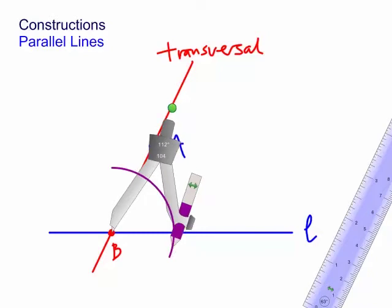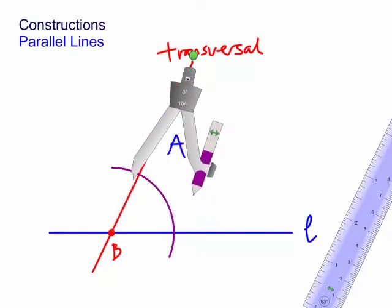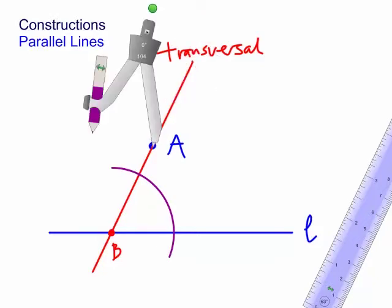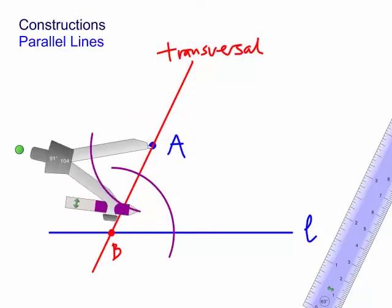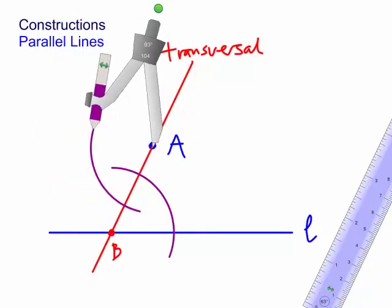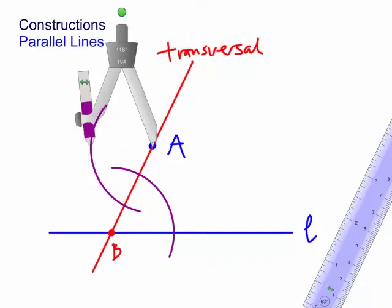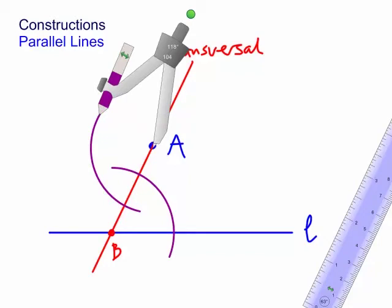We're also going to need to do an arc at point A, using the same radius. Put the compass in at A now. Starting above A and coming down — it's also got to cross the transversal. See how it's crossed the transversal there? That arc has to cross the transversal. Let's mark these points: the first arc cut the transversal at C, the second one at D.